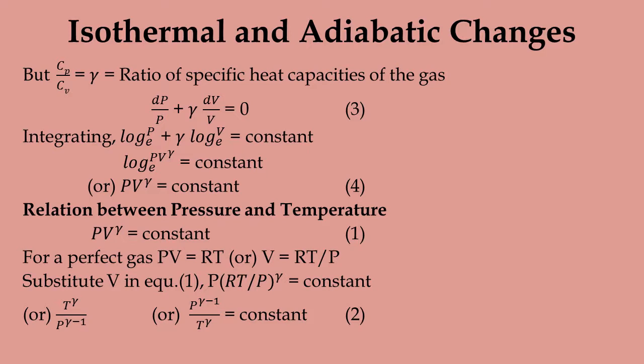We can derive the relation between pressure and temperature. The adiabatic equation is PV^γ = constant. For a perfect gas, PV = RT, so V = RT/P. Substituting the value of V into PV^γ = constant, we get T^γ / P^(γ−1) = constant.